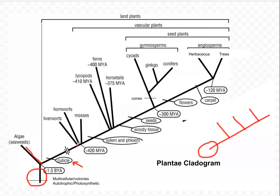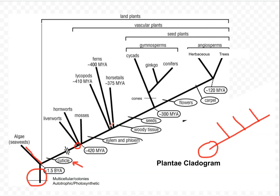It's also important to understand that every time something branched off, there was a common ancestor. Right here, liverworts and every other organism on here had a common ancestor. There are lots of things on here that have gone extinct, but every time something branches off, that's another lineage or line of organisms, and they would have had a common ancestor.